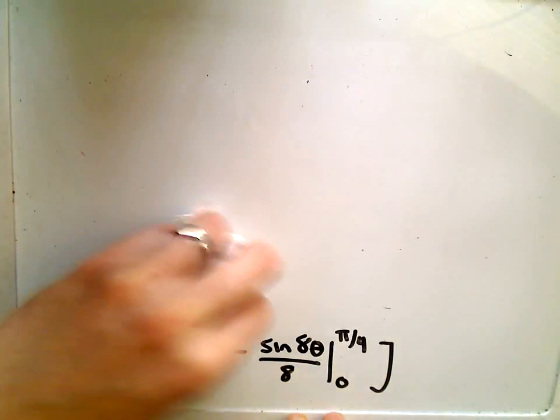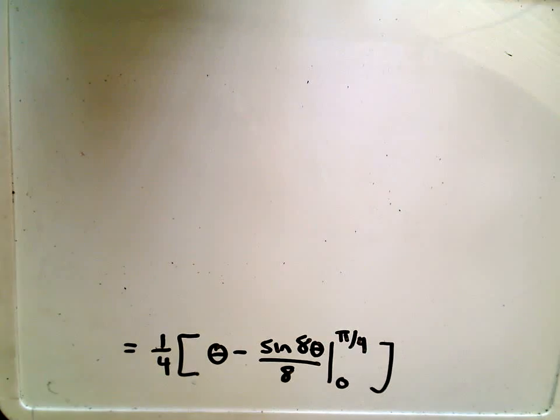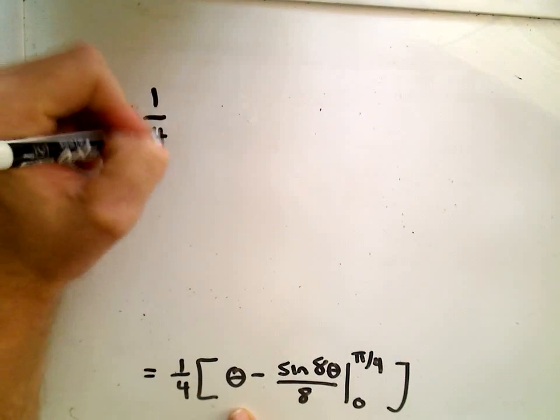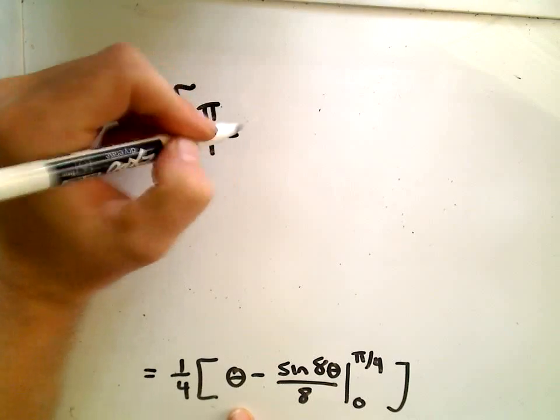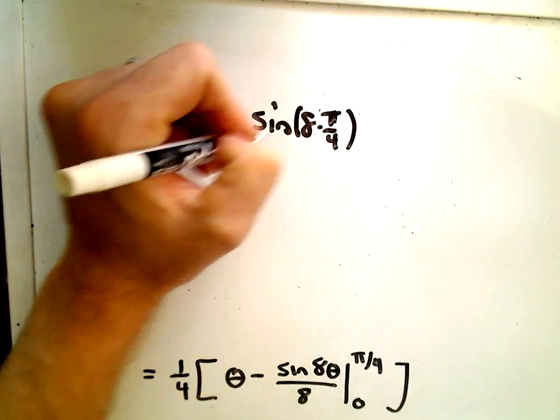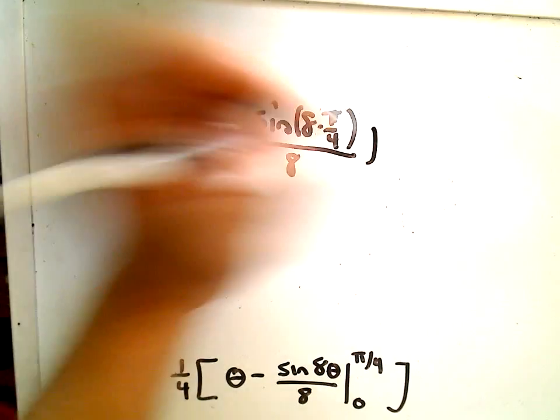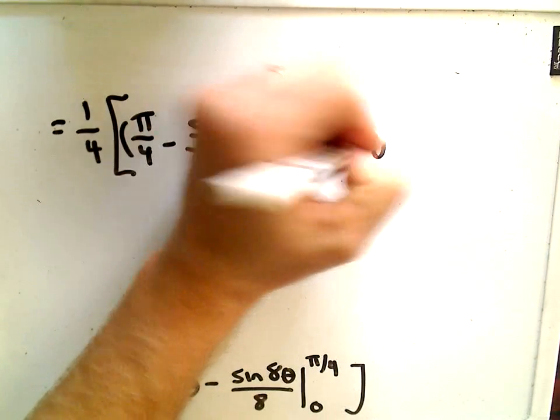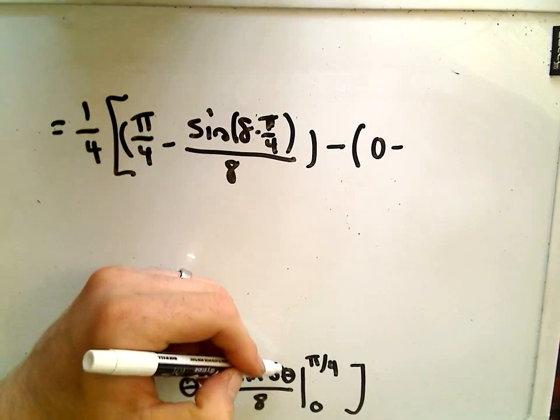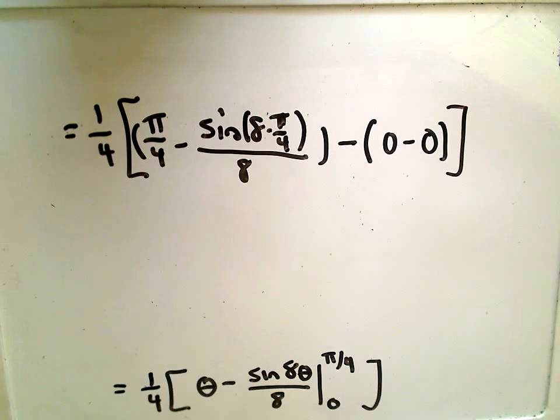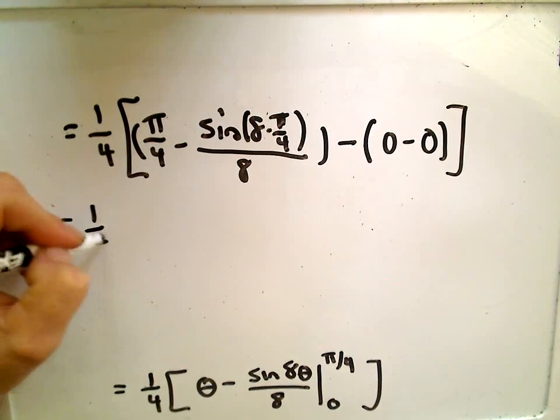We're finding areas here, so you better get something positive out or something went wrong. Let's plug everything in. We're going to have one-fourth. I'll plug in pi over four. I'll have to subtract away the sine of eight times pi over four. That's all being divided by eight. There's my upper limit of integration. And then we'll have to subtract away the lower limit. If I plug in zero, I'm just going to get zero. Notice on the inside, eight times zero will be zero. We know that sine of zero is zero. So the lower limit just turns into zeros.